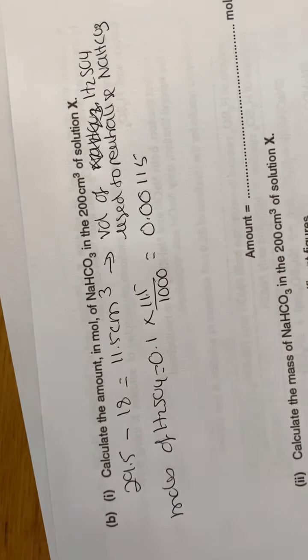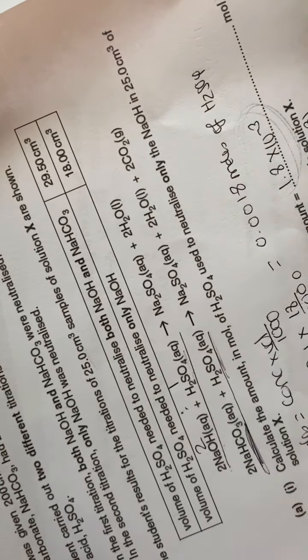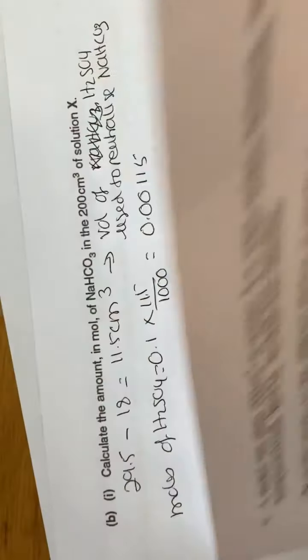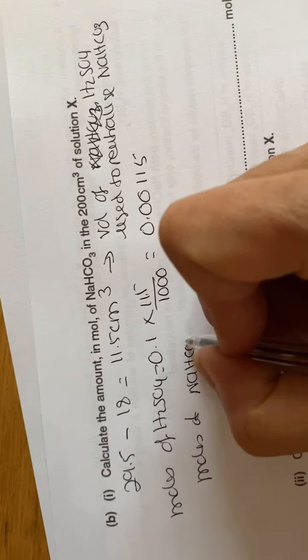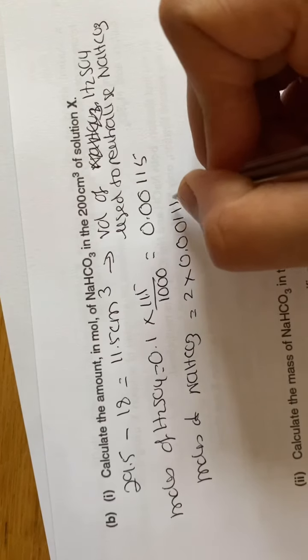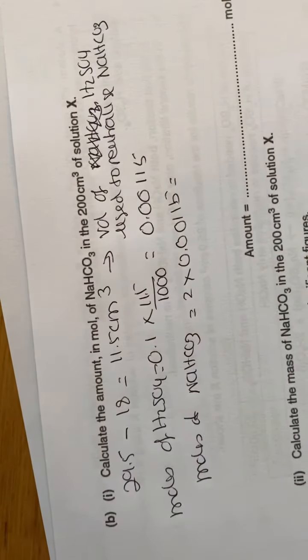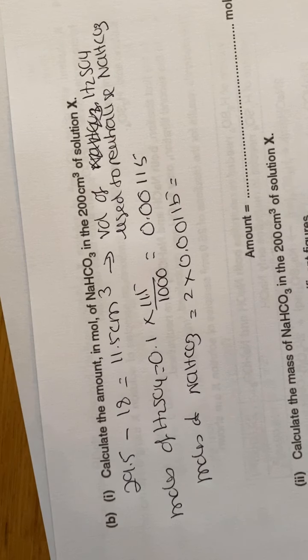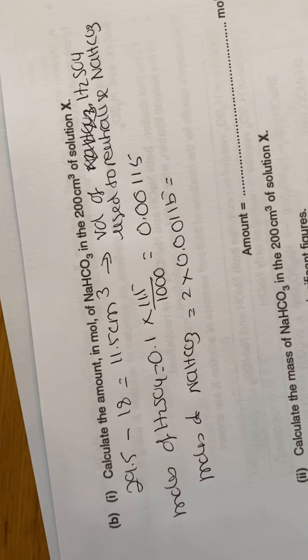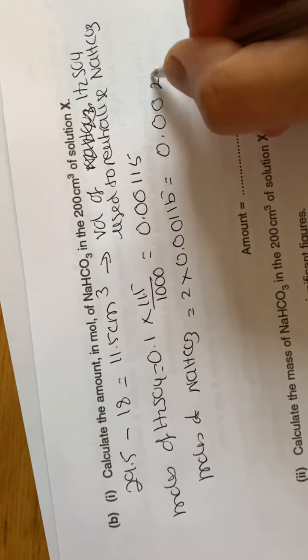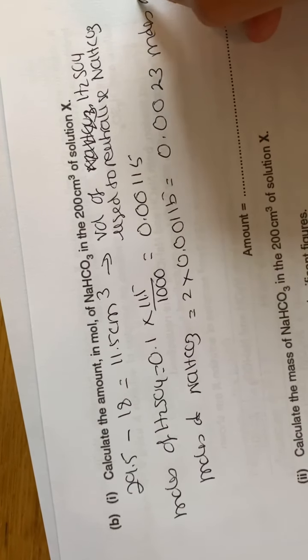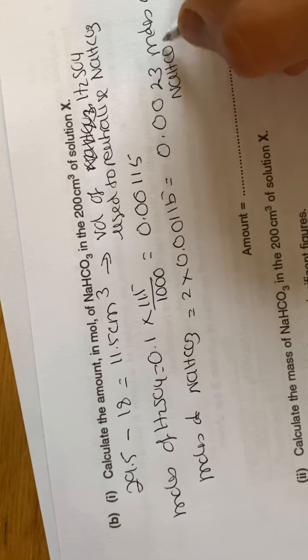The ratio between sodium hydrogen carbonate and sulfuric acid is 2:1, so the moles of sodium hydrogen carbonate will be twice as much. Therefore, moles of NaHCO₃ = 2 × 0.00115 = 0.0023 moles of sodium hydrogen carbonate in the 25 cm³ sample.